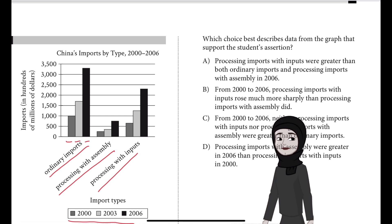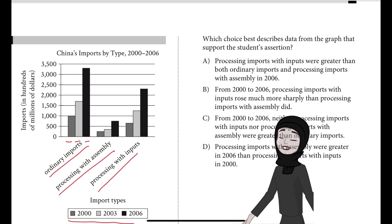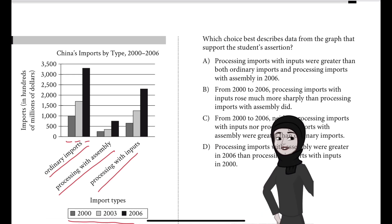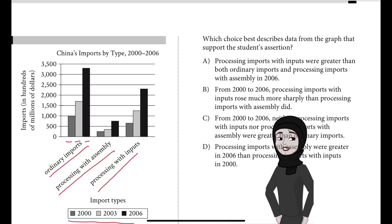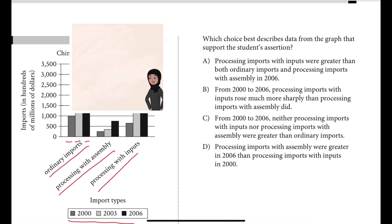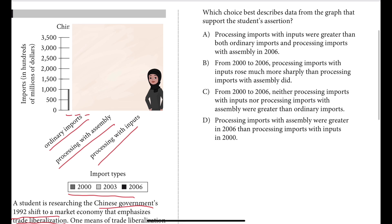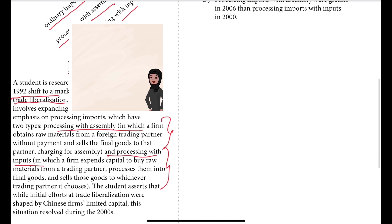The answer choices are: A — processing imports with inputs were greater than both ordinary imports and processing imports with assembly in 2006. B — from 2000 to 2006, processing imports with inputs rose much more sharply than processing imports with assembly did. C — from 2000 to 2006, neither processing imports with inputs nor processing imports with assembly were greater than ordinary imports. D — processing imports with assembly in 2006 were greater than processing imports with inputs in 2000.